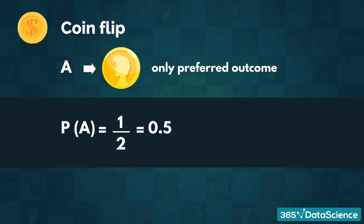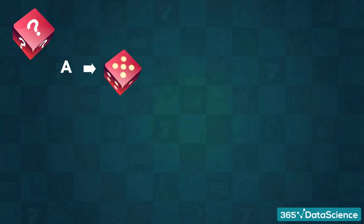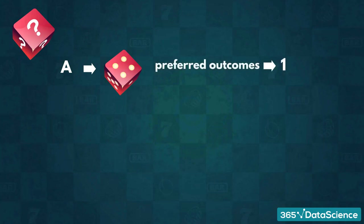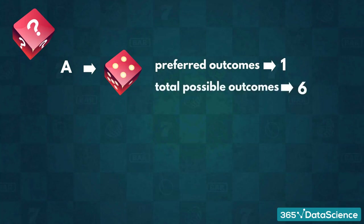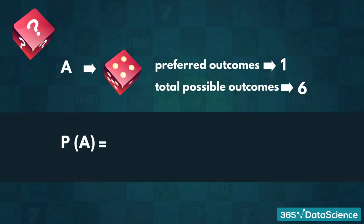Now imagine we have a standard six-sided die and we want to roll a 4. Once again, we have a single preferred outcome. But this time, we have a greater number of total possible outcomes – 6. Therefore, the probability of this event would be P(rolling 4) = 1/6, or approximately 0.167.